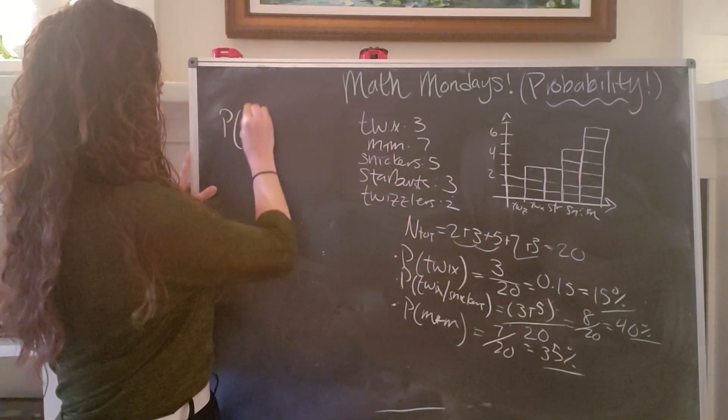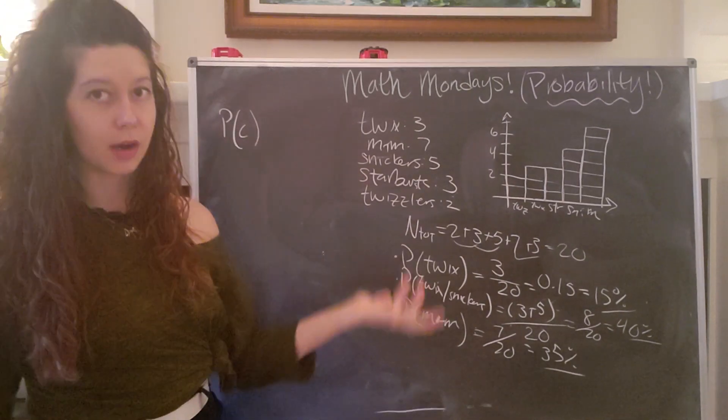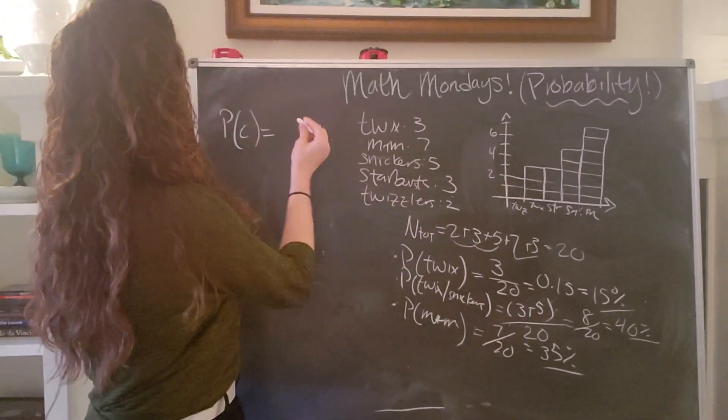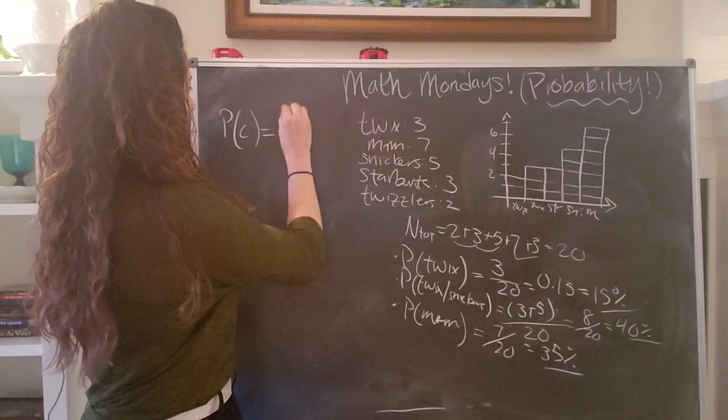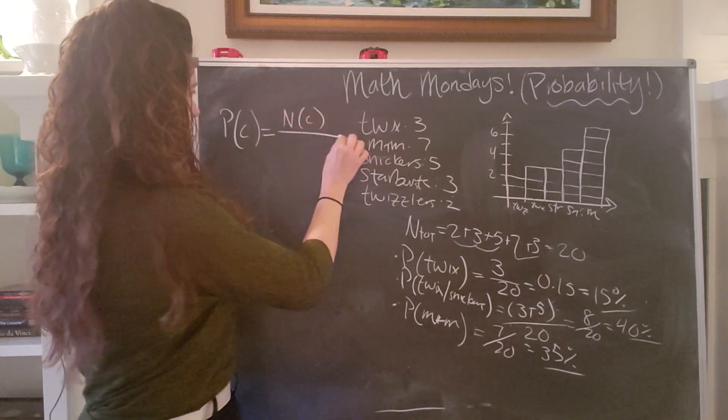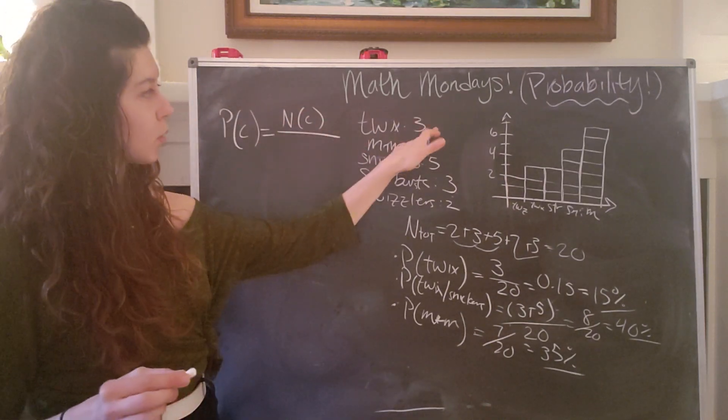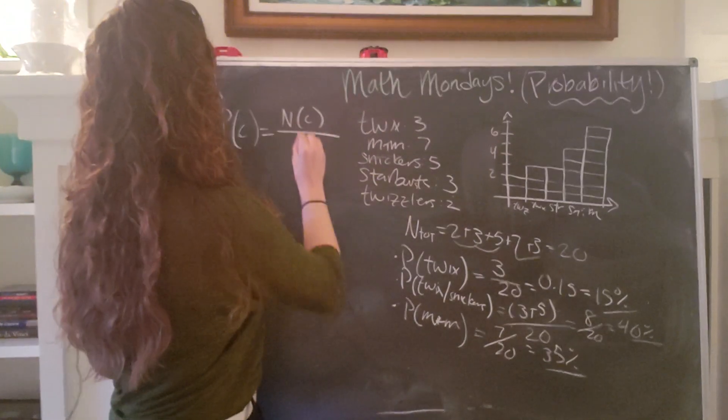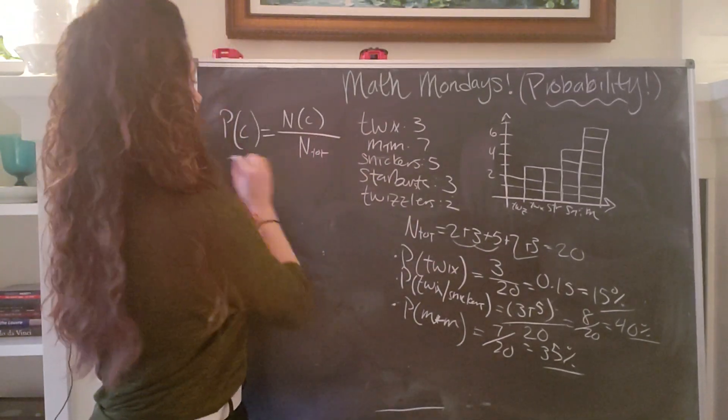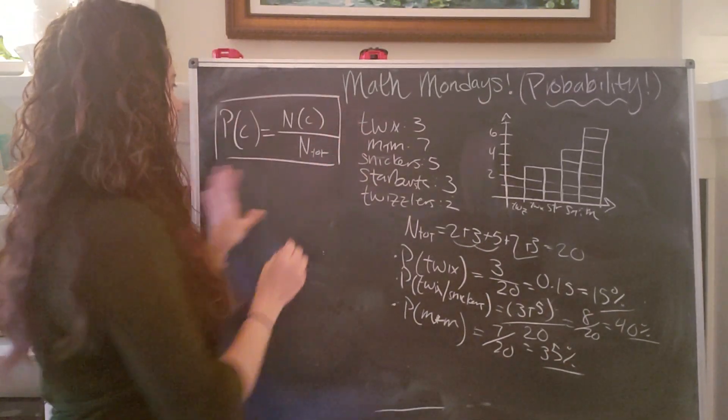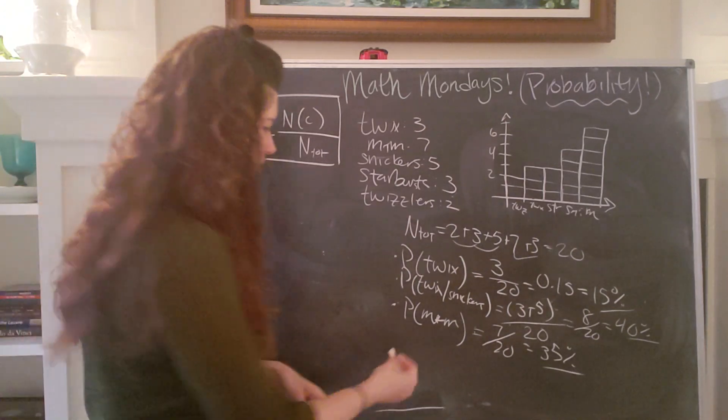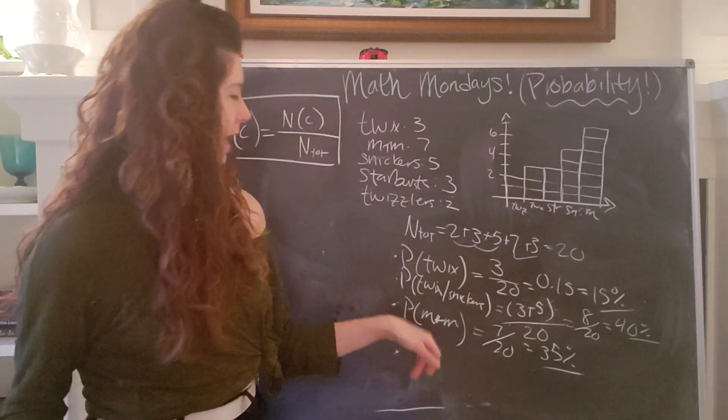equals the number of those things. So in this case, it would be the number of those types of candies divided by the total number of things that you have. So that is a very important equation.